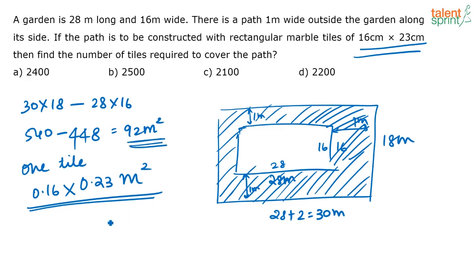So how many tiles are required? It is nothing but 92 divided by 0.16 into 0.23, or you can actually write it as 92. If you take out the points, you will have into 100, that is the decimal part. If you remove the decimal part, you will have 16 into 23. Now how do you solve this?